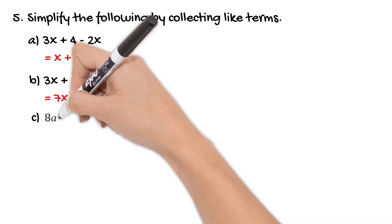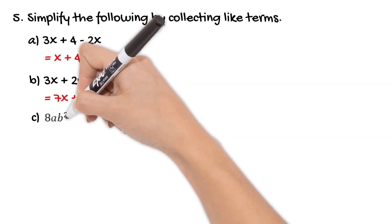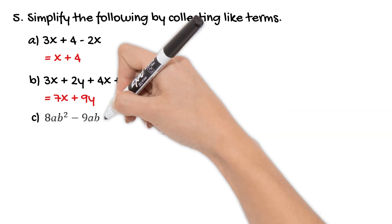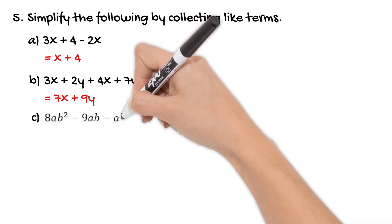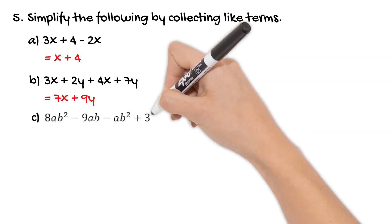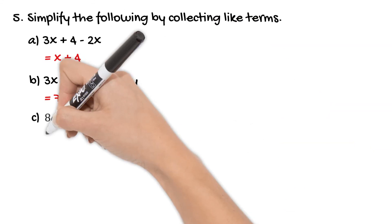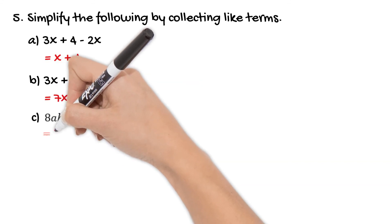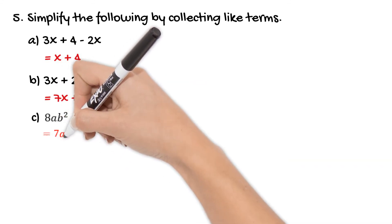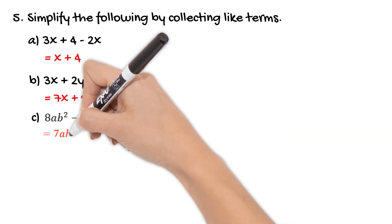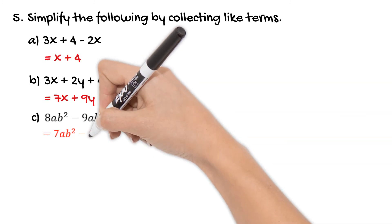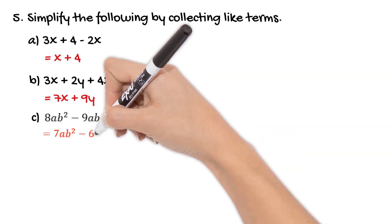So then our last expression is one that confuses lots of students because the pronumerals are the same but they have varying powers. So it's really important that you have an understanding that b is not the same value as b squared. So in that sense they are not like terms. However when you've got ab that's actually the same as ba because a times b is the same value as b times a. So because they have the same value they're like terms.